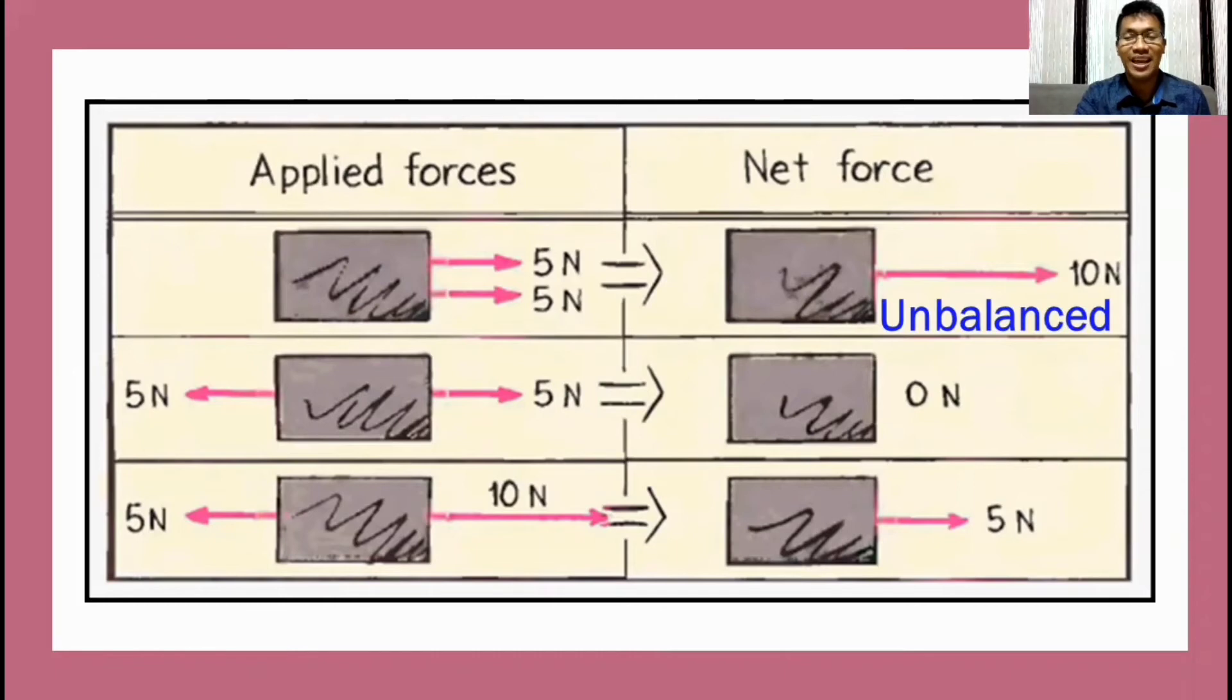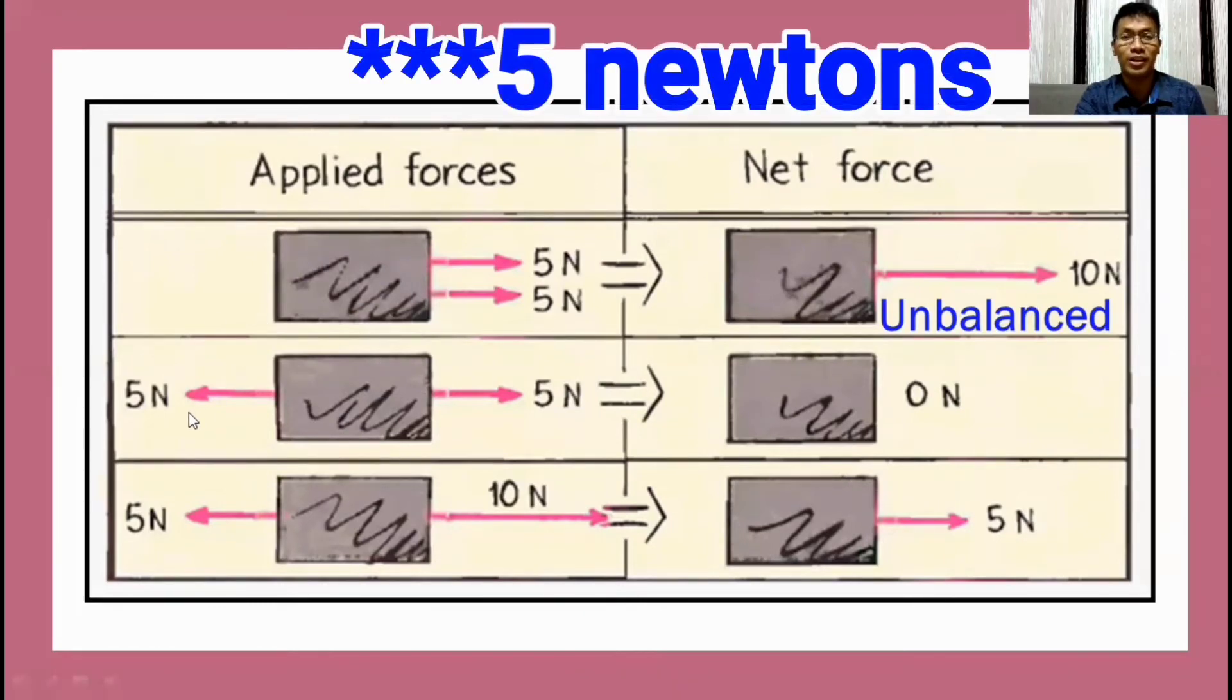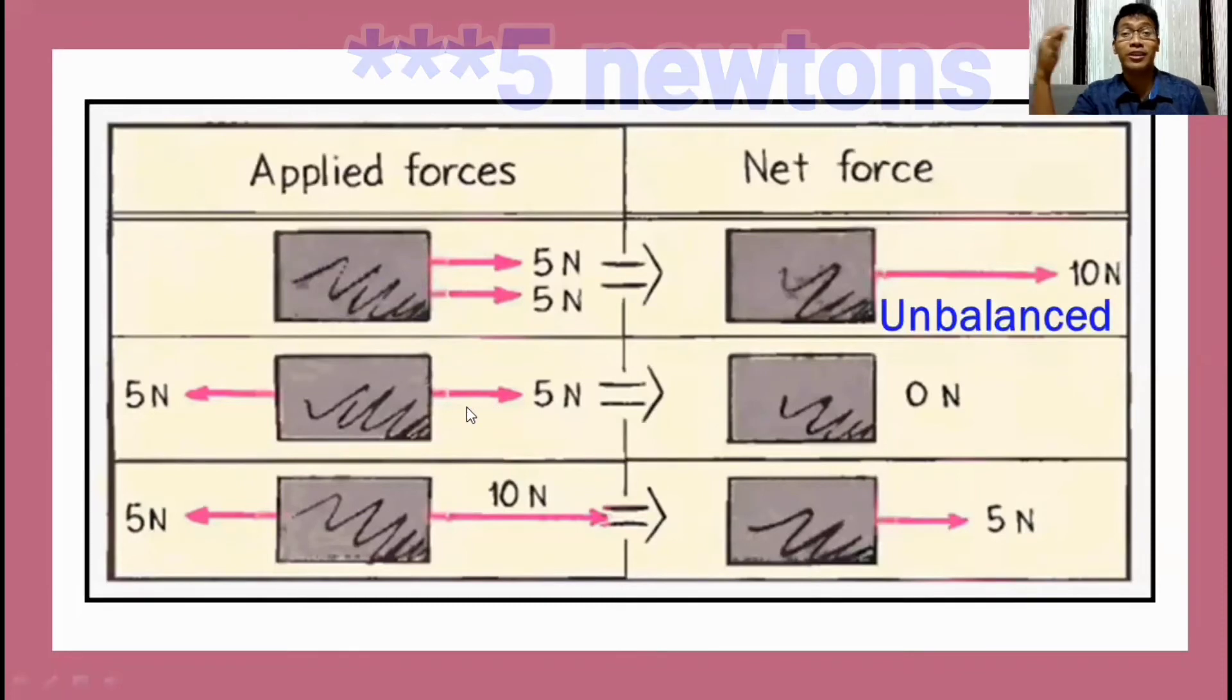Let's have the second example. In here, on the left side, a person is pulling this object. Let's say, for instance, again, a block of metal using five newton. While the person on the right is exerting the same amount of force. So they are opposite.